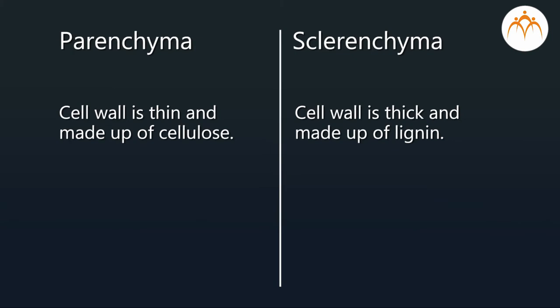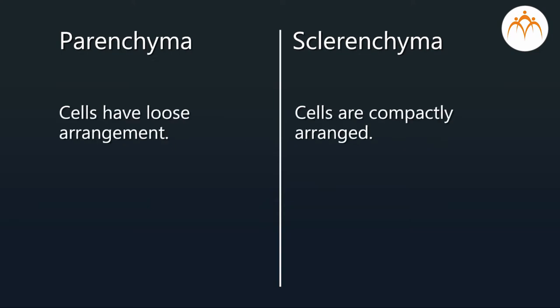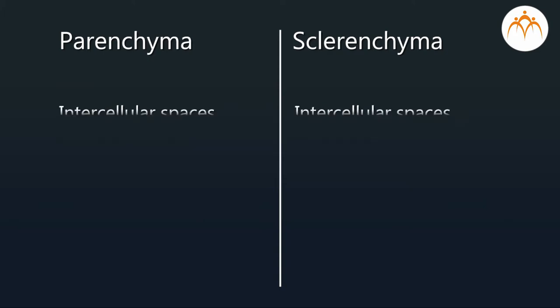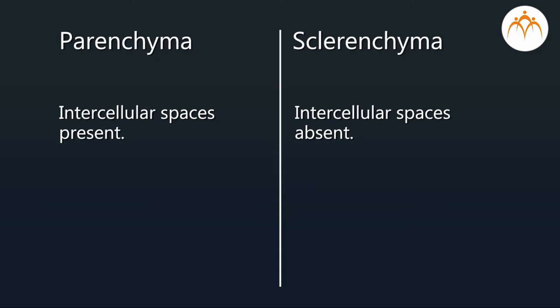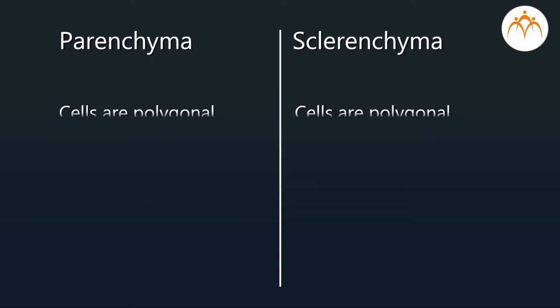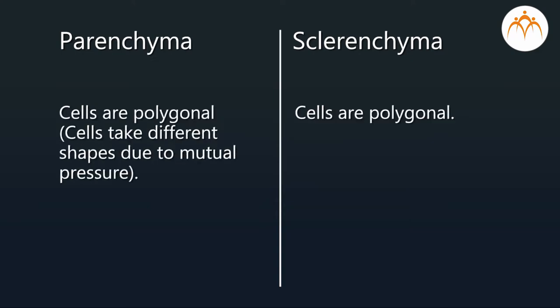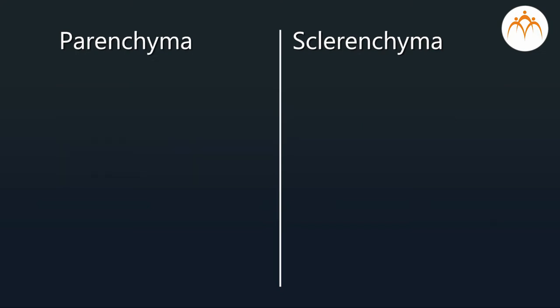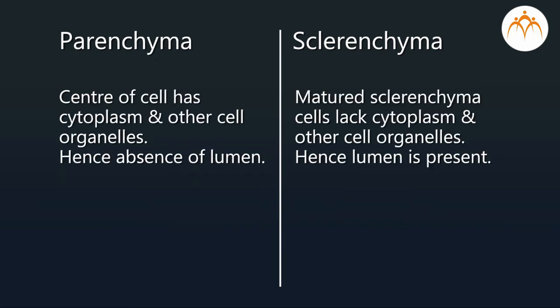Parenchyma cell wall is thin and made up of cellulose; sclerenchyma cell wall is thick and made up of lignin. Parenchyma cells have loose arrangement, while sclerenchyma cells are compactly arranged. Intercellular spaces are present in parenchyma but absent in sclerenchyma. Both cell types are polygonal. The center of the parenchyma cell has cytoplasm and other cell organelles, hence no lumen; matured sclerenchyma cells lack cytoplasm and other cell organelles.